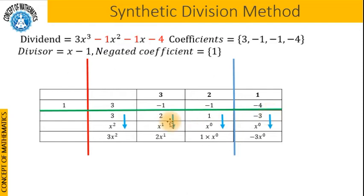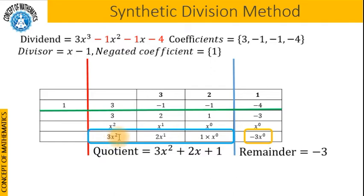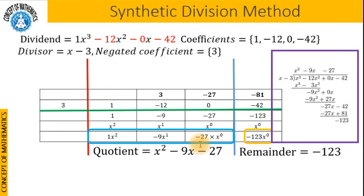Our next step is to multiply 3 by x squared, 2 by x, and 1 by x to the 0th power. We get 3x squared plus 2x plus 1 as the quotient after combining these terms. And of course our remainder is negative 3 times x to the 0th power, that is negative 3. Now I will show how to perform synthetic division in a single go.